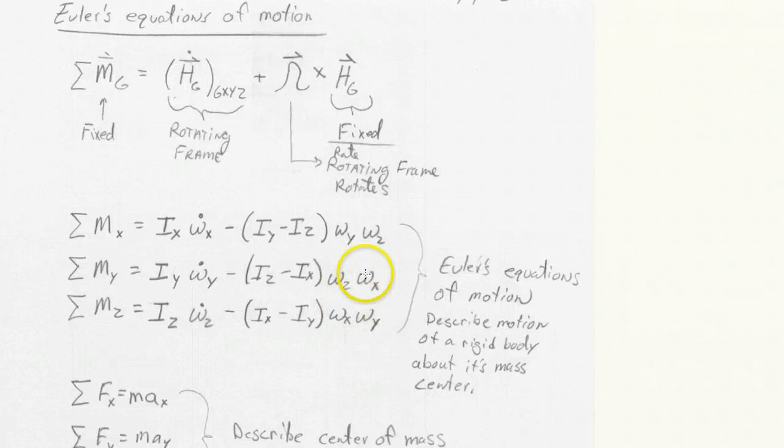So there's two different ways of writing this. The first one I've written here on the top is kind of the vector form, and the second one breaks it down into components. Here,